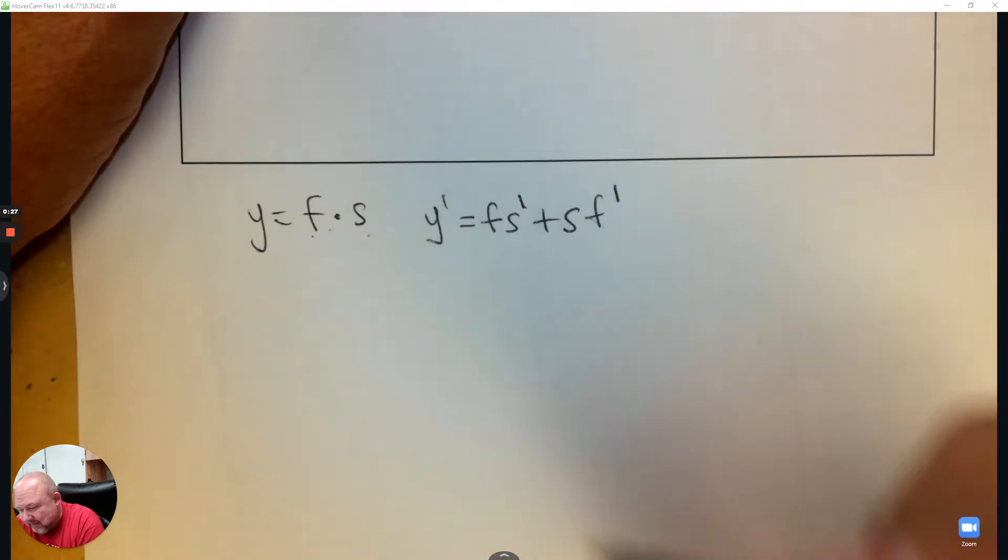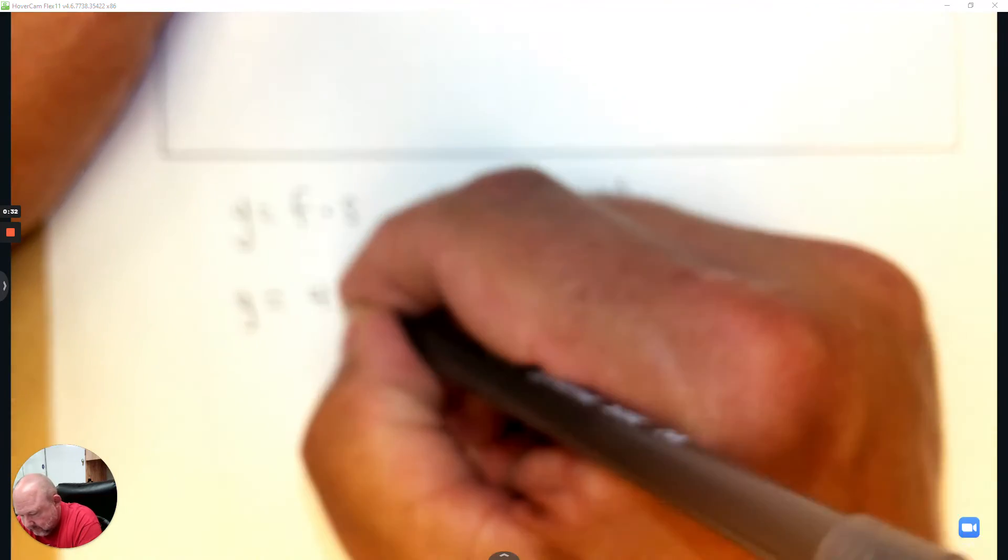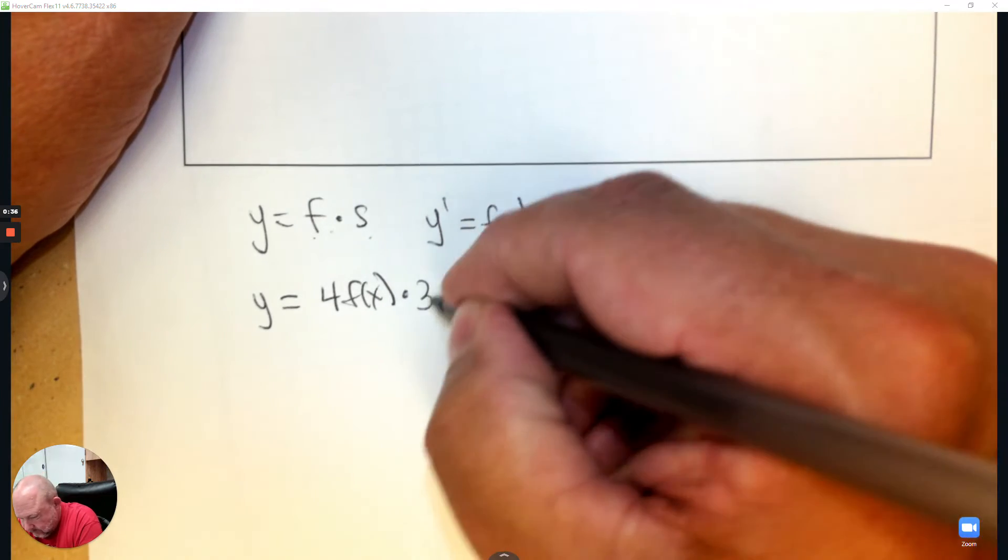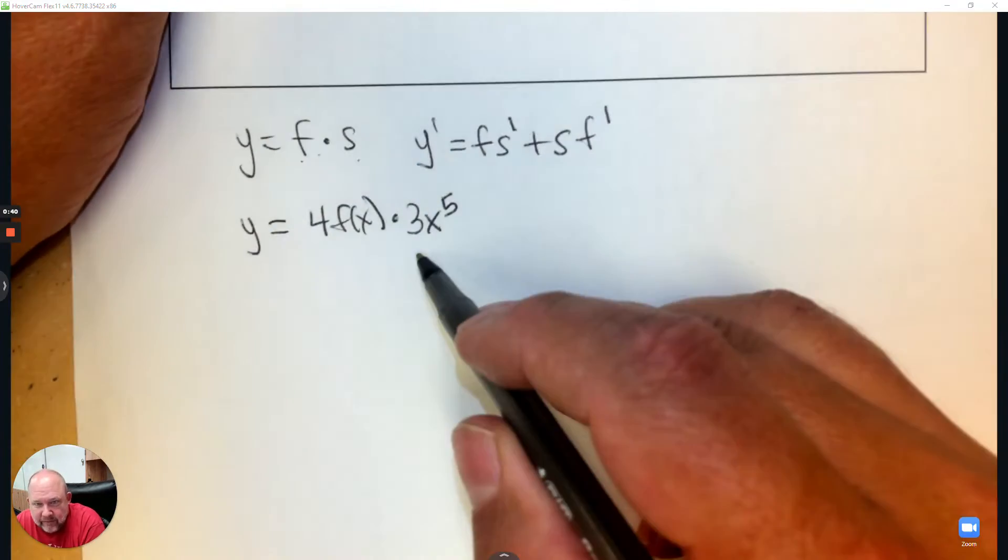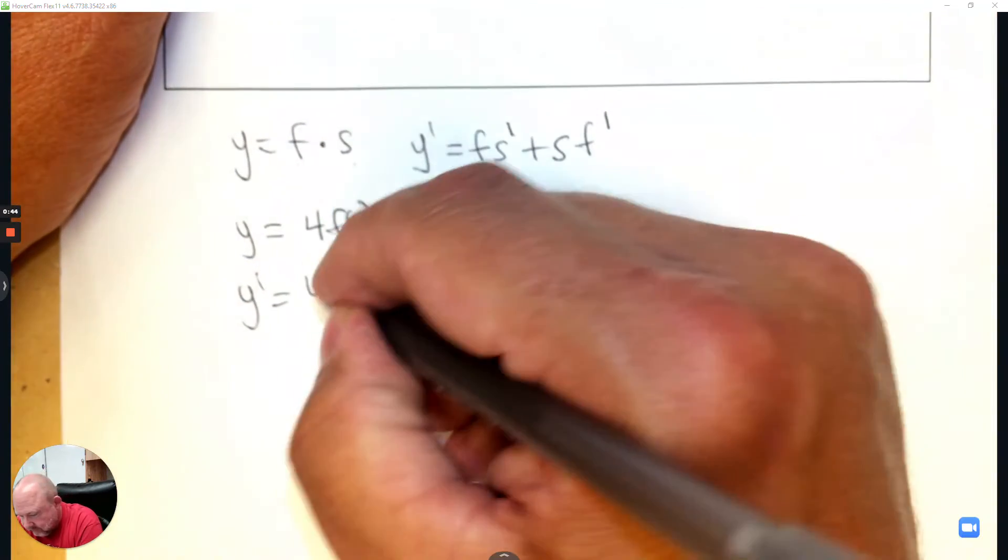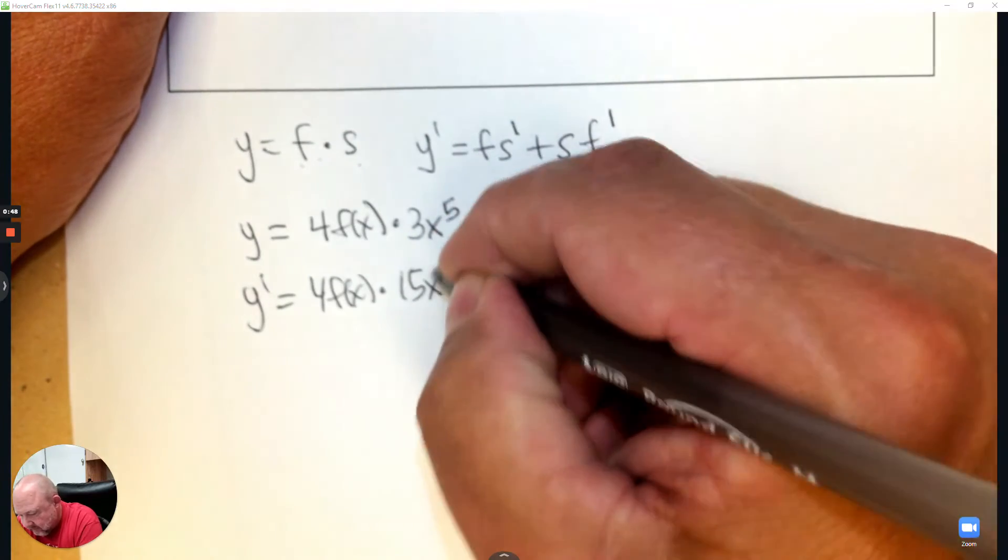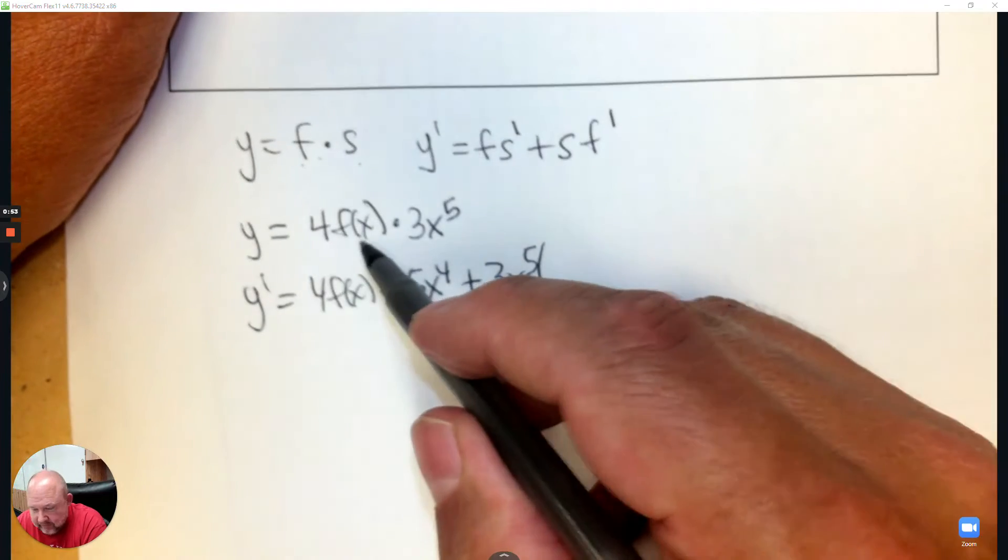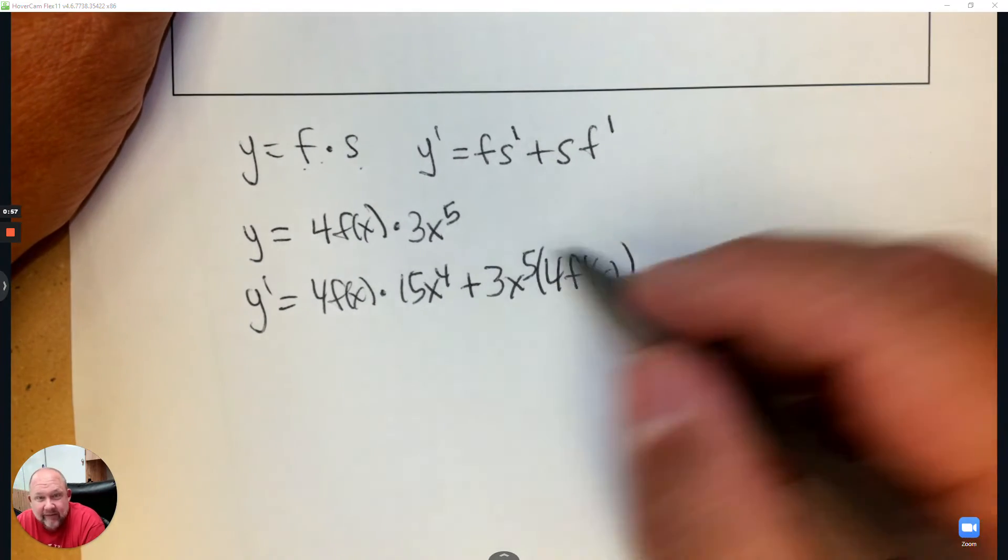How about what does it look like generically? So let's say I give you something generic and I want you to take the derivative. You go the first times the derivative of the second, subtract one to the exponent, plus the second times the derivative of the first, which would be four times the derivative of f at x. That's it.